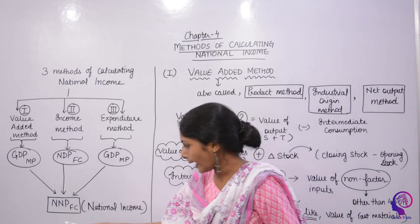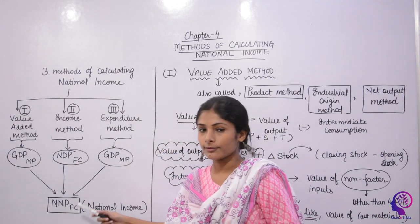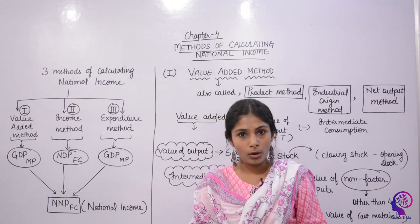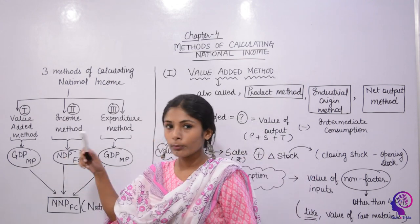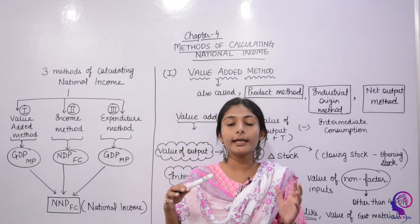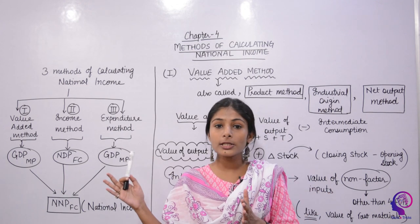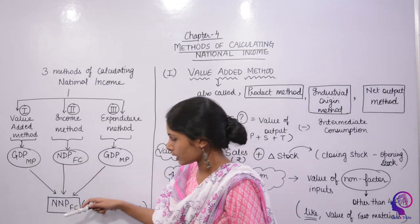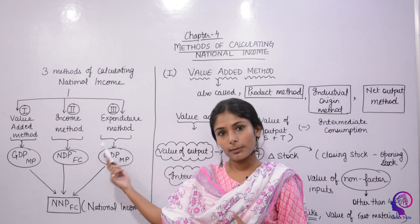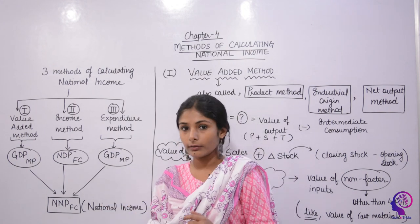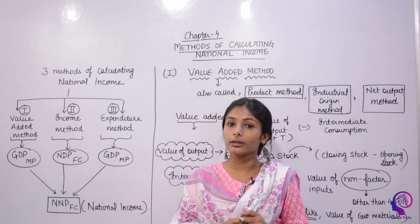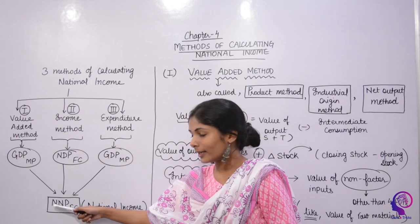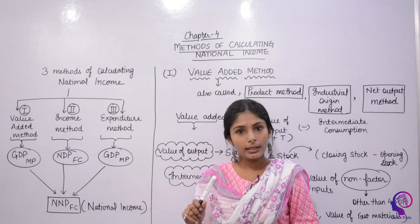National income means NDP at Factor Cost, or Net National Product at Factor Cost. You also have GDP at Market Price, Depreciation, NFIA, and Indirect Taxes — these are the things needed for conversion. You will always remember that these three methods will not directly give you NNP at Factor Cost, that is, national income.